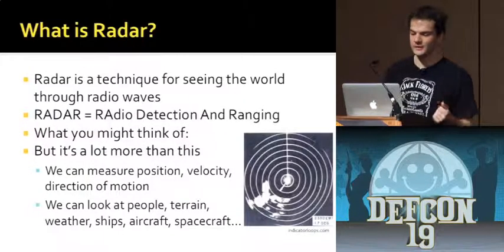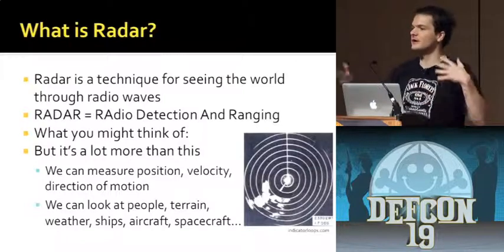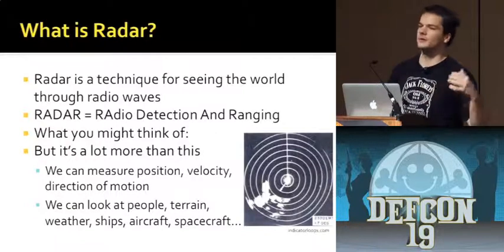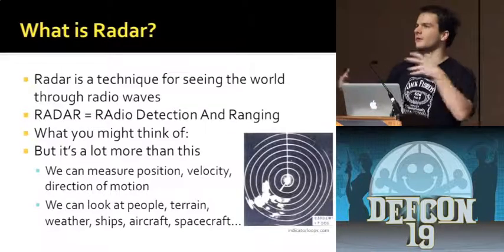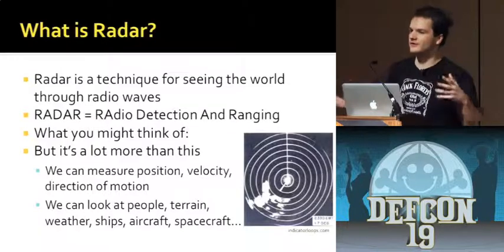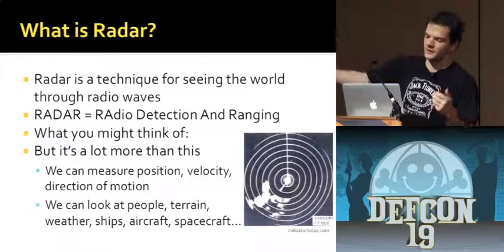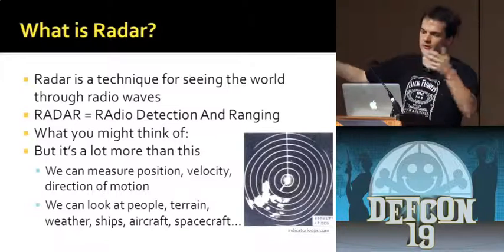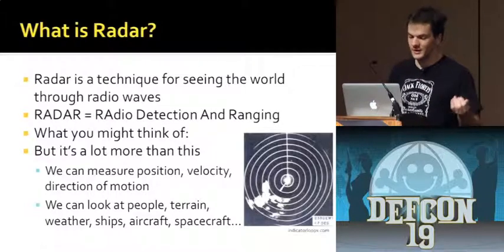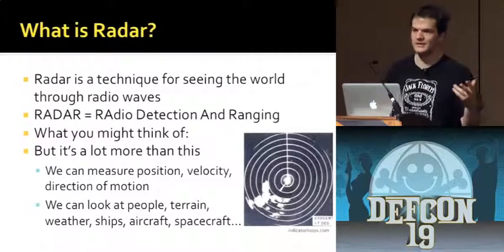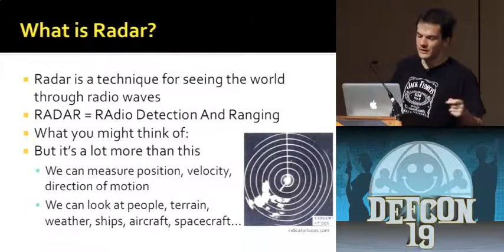What is radar? Basically it's some way of looking at the world through radio waves. You're measuring something, sensing some sort of electromagnetic field, and generally what you're doing is you send out a pulse and you look at the response. Radar used to be an acronym — it's become a word. It stands for Radio Detection And Ranging, and that's basically what it is.